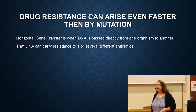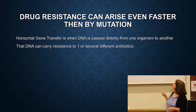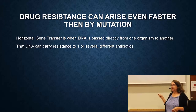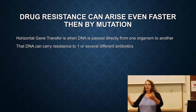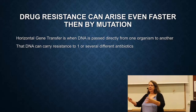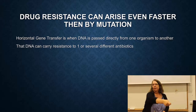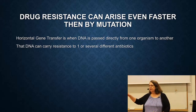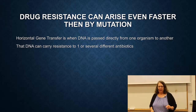Drug resistance can arise much faster through something called horizontal gene transfer, which is when DNA is passed directly from one organism to another. That DNA can carry resistance to one or several different antibiotics. The equivalent of this is when you have a baby, you give them your DNA — but this is the equivalent of me handing my DNA to Martin and him taking it up directly. This is what horizontal gene transfer is, and it happens fairly commonly in bacteria. There are three ways it can occur.